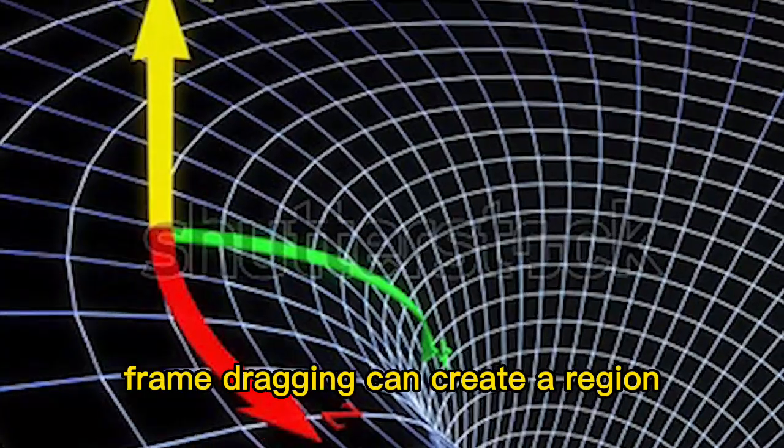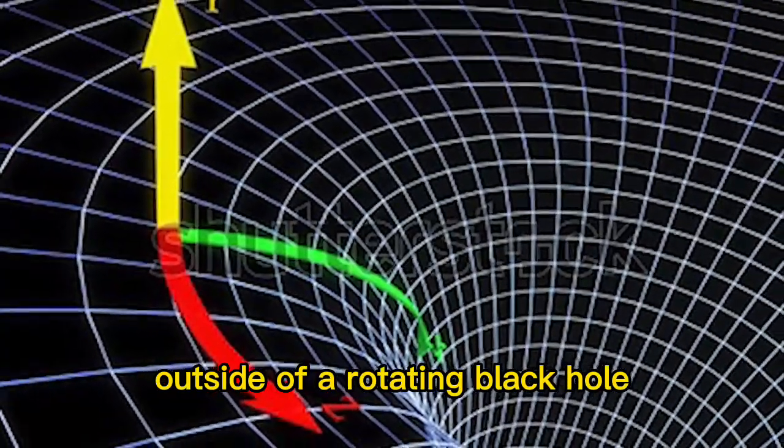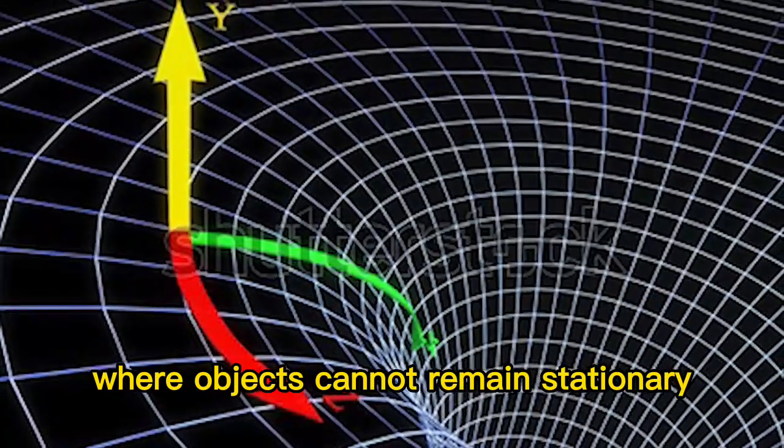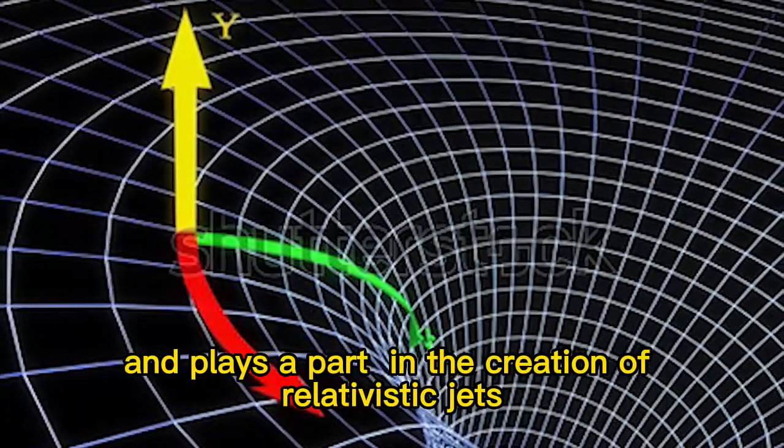Frame dragging can create a region outside of a rotating black hole known as the ergosphere, where objects cannot remain stationary, and plays a role in the creation of relativistic jets.